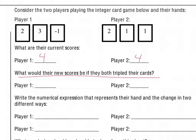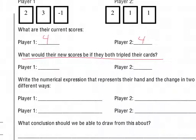What would happen if they tripled their cards? That would be 2 plus 3 plus negative 1 plus another 2 plus 3 plus negative 1 plus 2 plus 3 plus negative 1. That's a really long way to write it — this is really just repeated addition for tripling. A different way to write this expression is 3 times (2 plus 3 plus negative 1), since we have 3 sets.